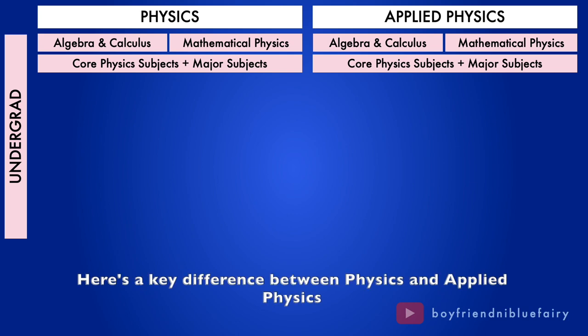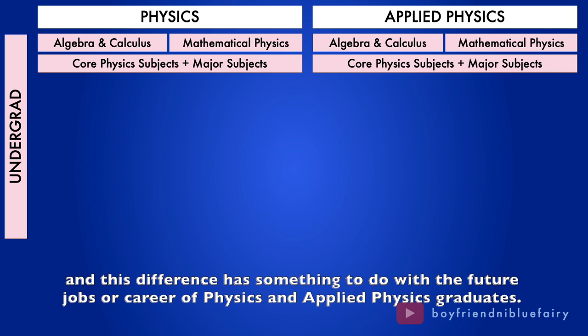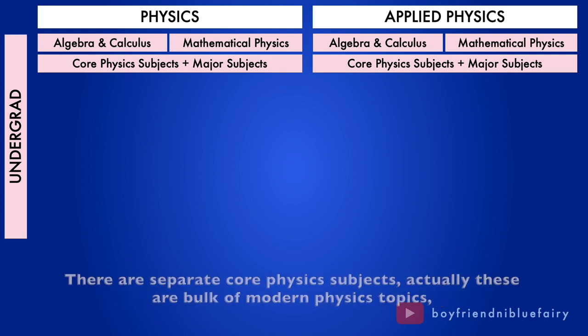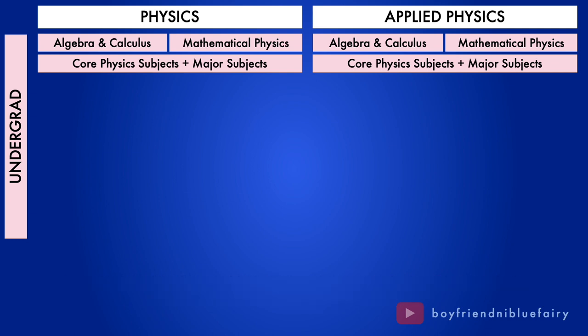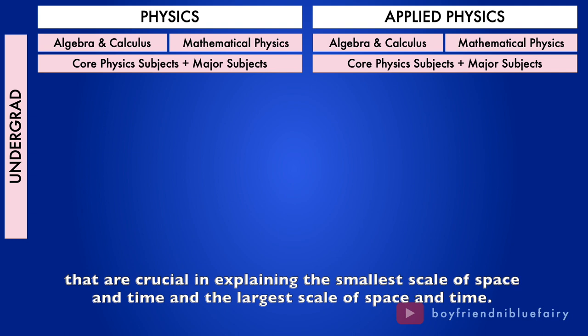Here's a key difference between physics and applied physics. And this difference has something to do with the future jobs or career of physics and applied physics graduates. There are separate core physics subjects, actually these are bulk of modern physics topics that are crucial in explaining the smallest scale of space and time and the largest scale of space and time.